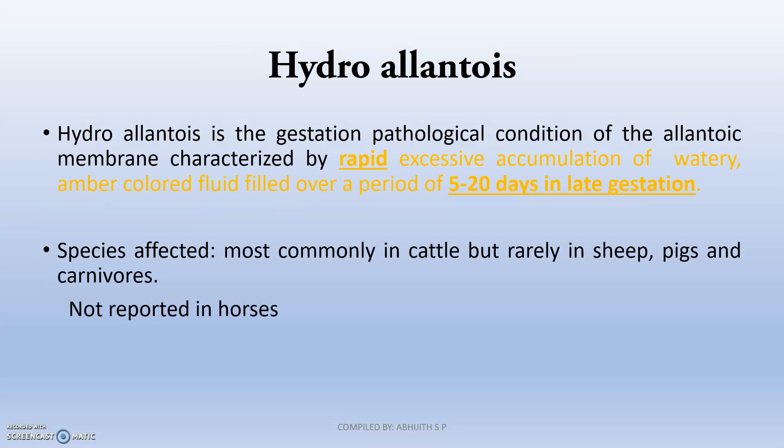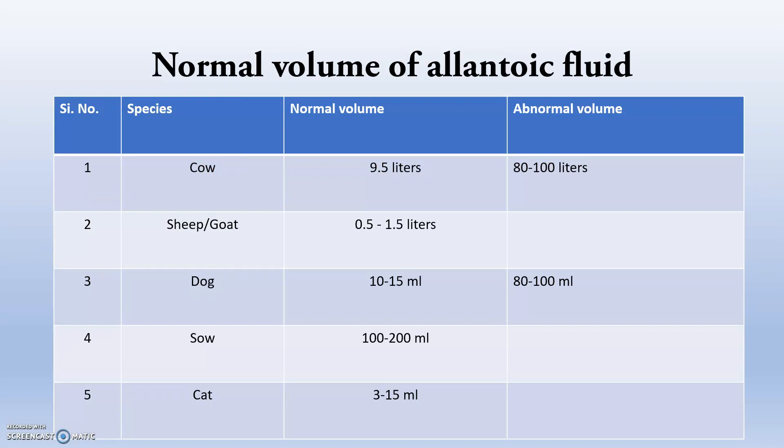Hydroallantois is the gestational pathological condition of the allantoic membrane characterized by rapid, excessive accumulation of watery amber-colored fluid over a period of at least 20 days or 3 weeks in late gestation. The species affected is mostly cattle, and it is not reported in horses at all. The normal volume of allantoic fluid in a cow is nearly 10 liters, but in very severe hydroallantoic conditions it can go up to 100 liters, with a record of 250 liters reported.